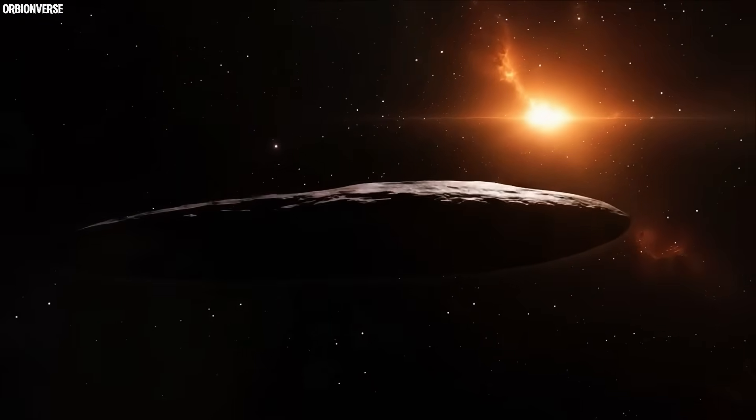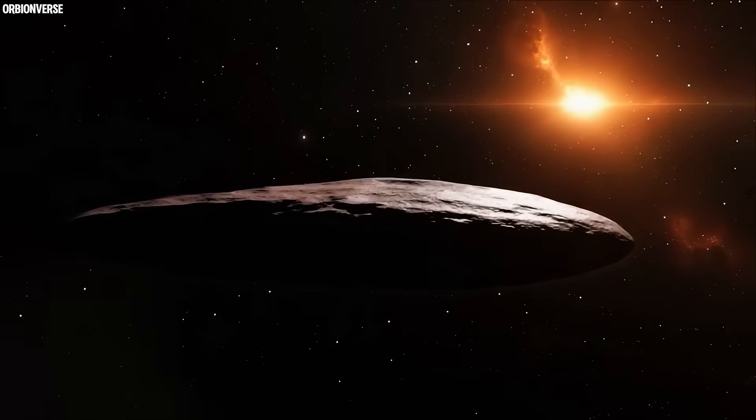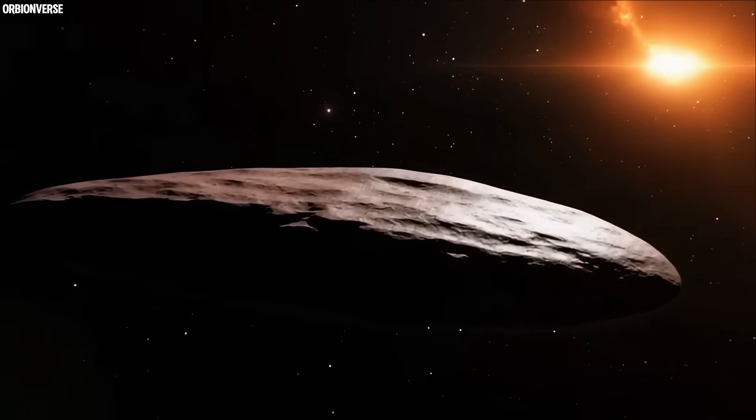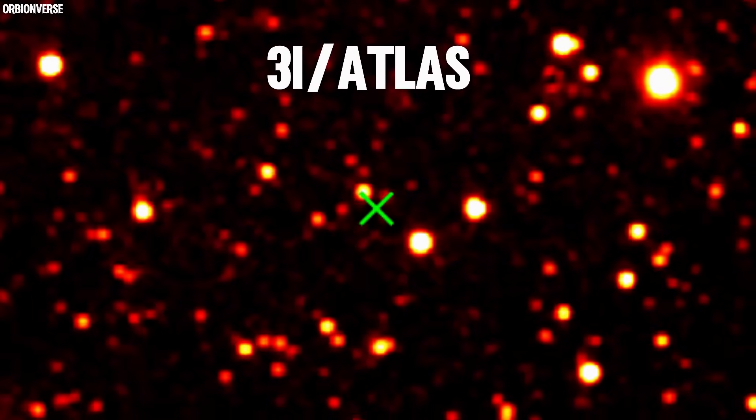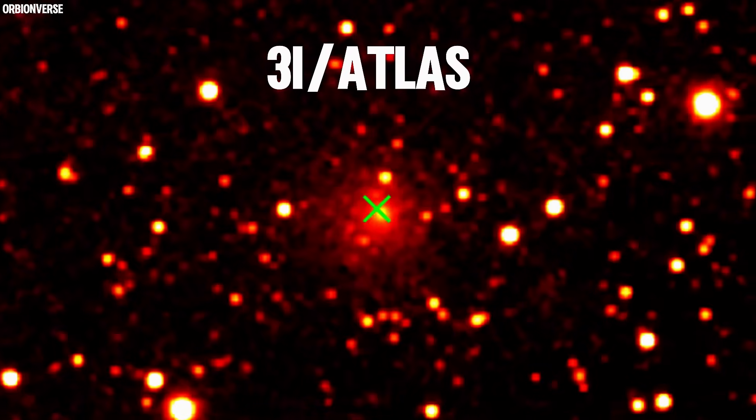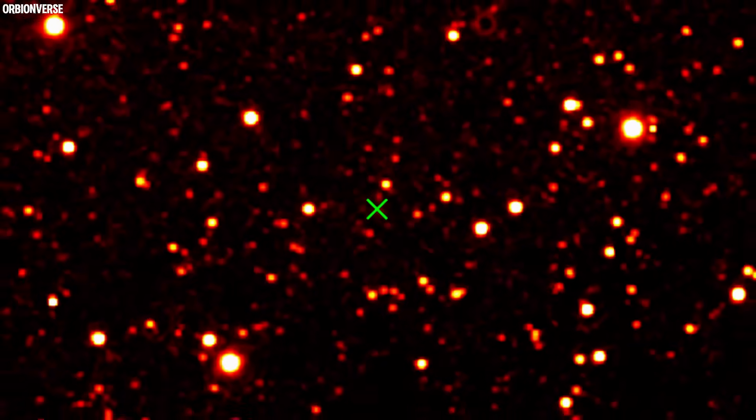It arrived from the void, a silent traveler on a hyperbolic path. Its name is 3i-ATLAS, the third confirmed interstellar object ever detected passing through our solar system.